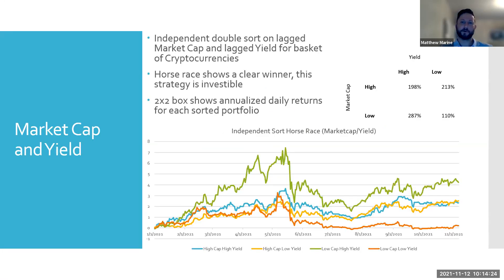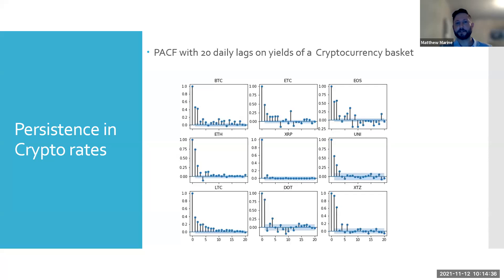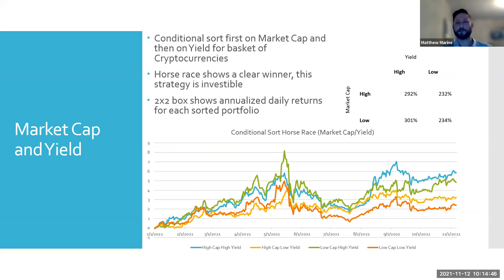I conducted an independent double sort, which gave somewhat inconclusive results. I then asked whether returns might be related to market cap — maybe low yield returns are a function of market cap. So I did a conditional sort: conditioning on market cap, you get an increase in returns when separating baskets by low and high yield, conditioning on lagged market cap and lagged yield. This is actually an investable strategy — from low to high yield you get an increase in returns on both high and low market cap.